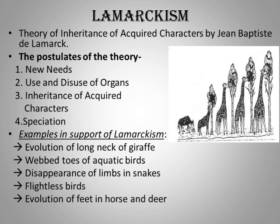Flightless birds like ostriches had ancestors capable of flying. Due to environmental factors, they had plenty of food nearby and were well protected, so they did not need to move to distant places. Because of this, their wings were not of much use and became vestigial later on, resulting in flightless birds.